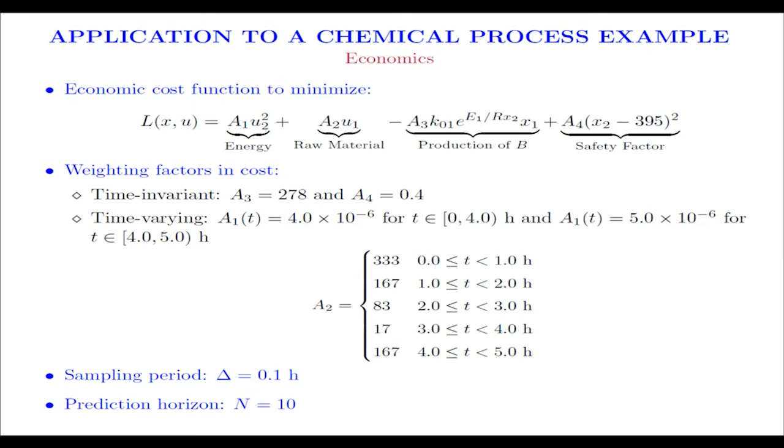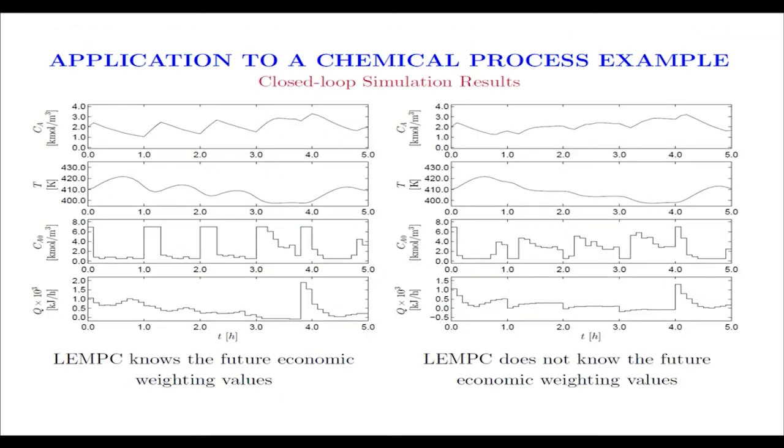To design the economic cost function, we're going to consider that we want to minimize this function that accounts for energy, raw material price, and the production of B. We're going to credit the cost for the production of B, as well as a safety factor. This ensures that the operation is maintained within the median temperature. For the purposes of this study, we're going to consider that A3 and A4 are time invariant, while A1 and A2 vary with time. Here's the real time energy management. We're accounting for the fact that the energy price might change with time.